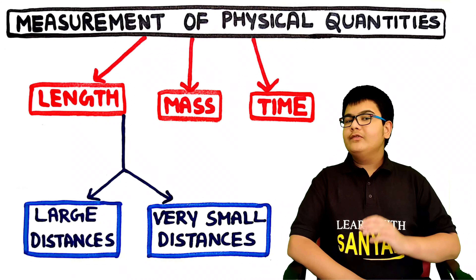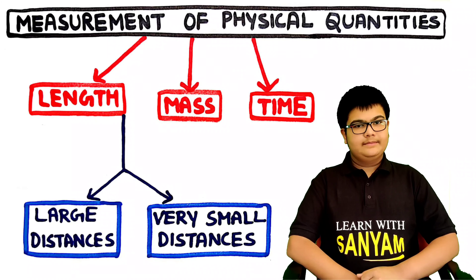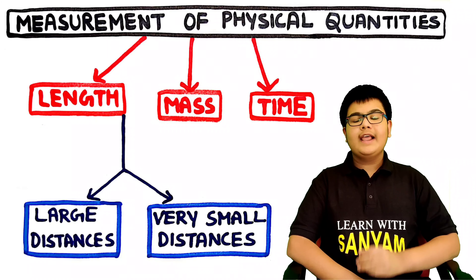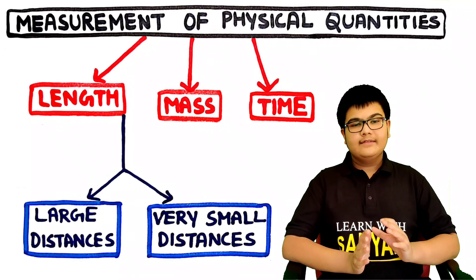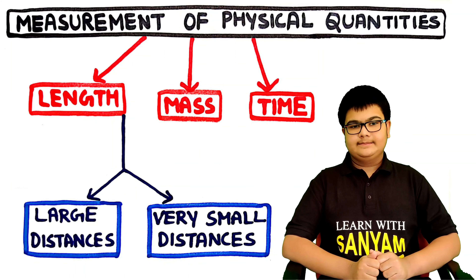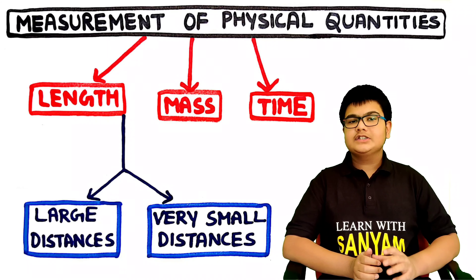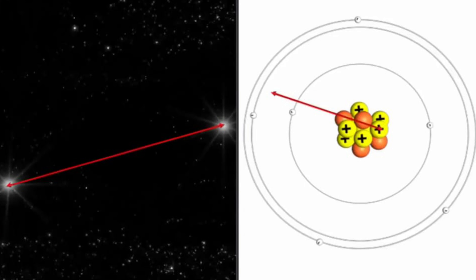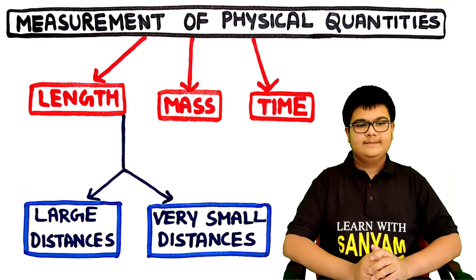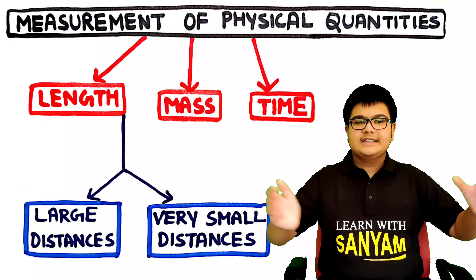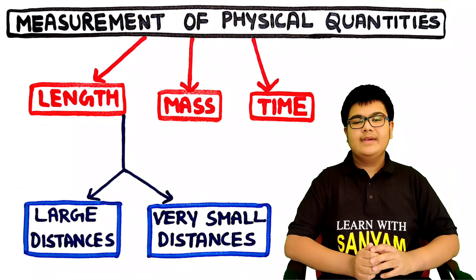Welcome back to the second lecture of Class 11 Science Chapter 2, Units and Measurements. In this lecture, we shall discuss measurement of physical quantities, in which we shall take up three fundamental quantities: length, mass, and time. First, let's discuss measurement of length.